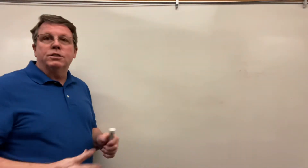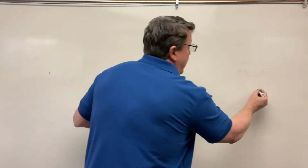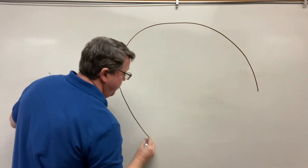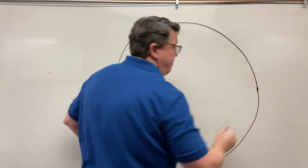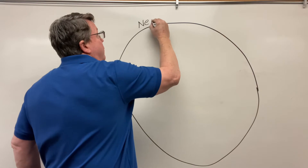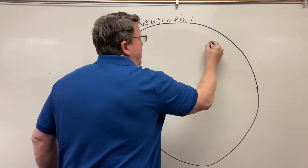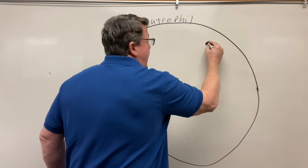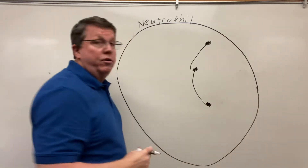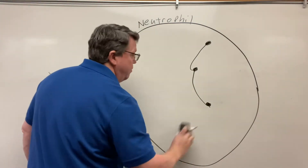We're going to start off with the neutrophils, so we'll draw this like this. This is my neutrophil right here. A neutrophil basically is multinucleated, which means it has more than one nucleus.